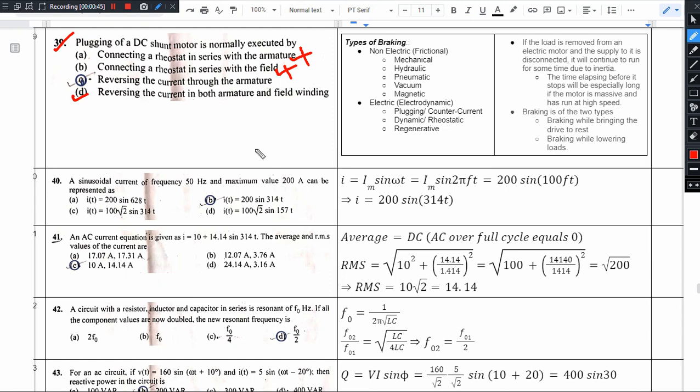So in effect, in this direction, the motor direction remains the same. So we cannot use option D. Option C is the right answer: reversing the current through the armature only. In the armature, it will develop opposing torque.